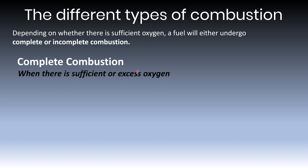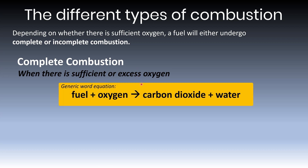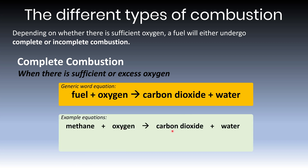Complete combustion occurs when there is sufficient or more than enough oxygen. A generic word equation for complete combustion is: fuel + oxygen → carbon dioxide + water. Carbon dioxide and water will always be the products of complete combustion as long as you use a hydrocarbon fuel like methane, propane, or butane. The names of these products don't change depending on which fuel you use — it's always carbon dioxide and water. A common misconception is thinking it forms 'methane dioxide' or 'butane dioxide'; no, it's just carbon dioxide.